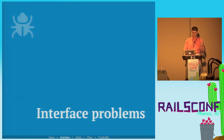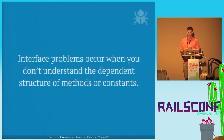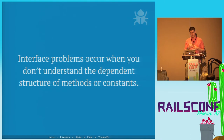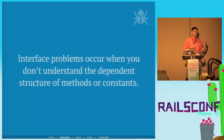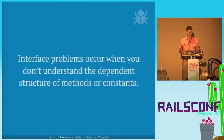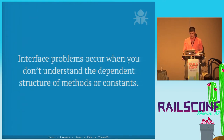Interface problems occur when you don't understand the dependent structure of methods or constants. Methods have a return value, parameters, parameter order, parameter types. Constants have methods defined on them, an ancestry, descendants. You're making certain assumptions every time you call a function or reference a constant.